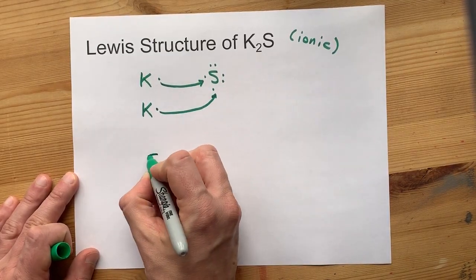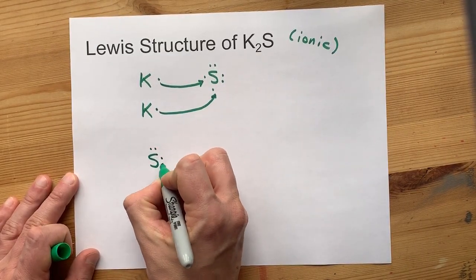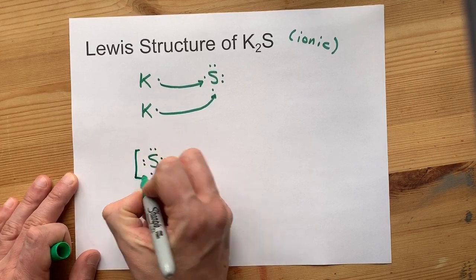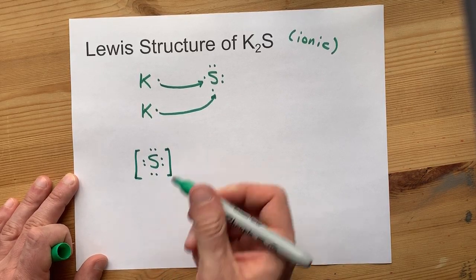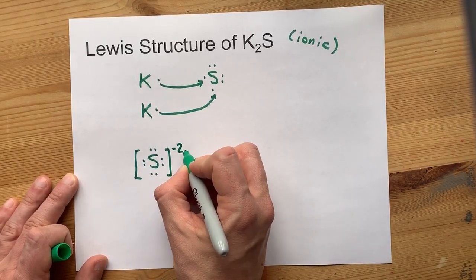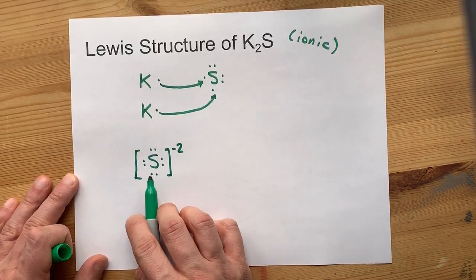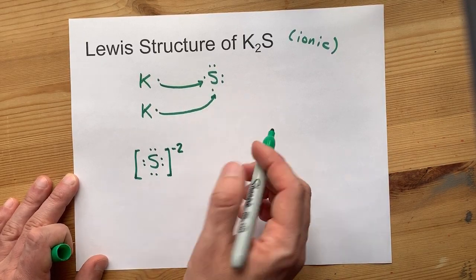To show the end product here is to write a sulfur with eight dots around it, that is the full octet after all, and a minus two charge because it has two extra electrons compared to how it started.